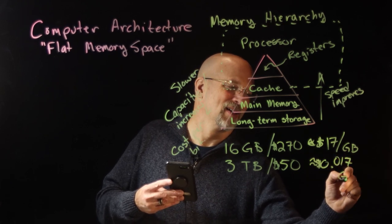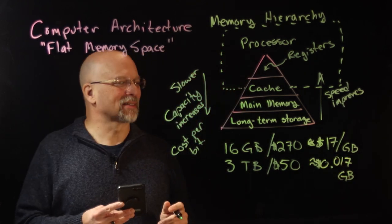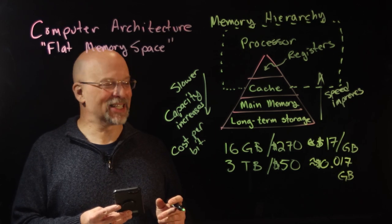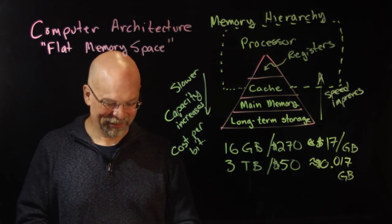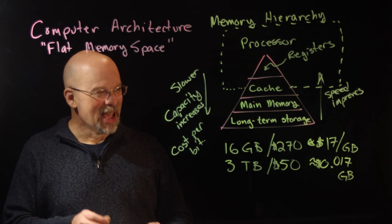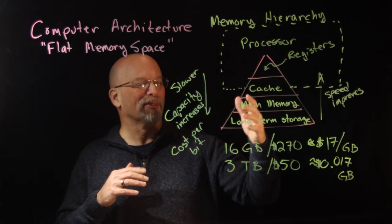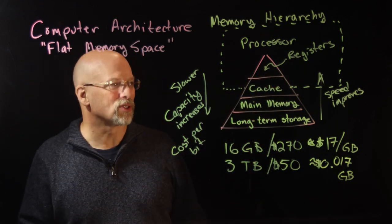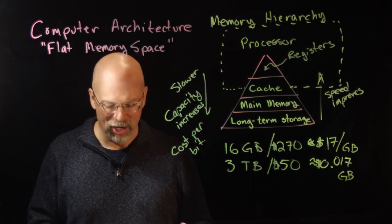Fifty dollars divided by three thousand—you're looking at about 1.7 cents per gigabyte.